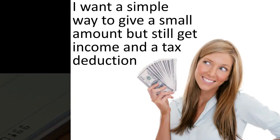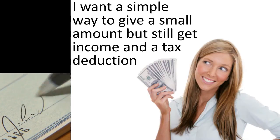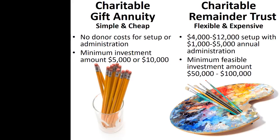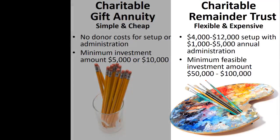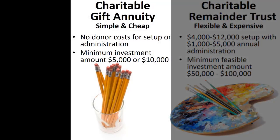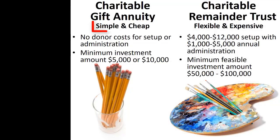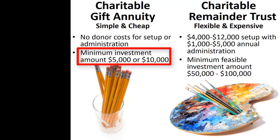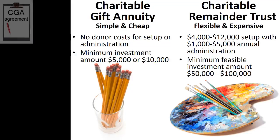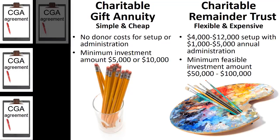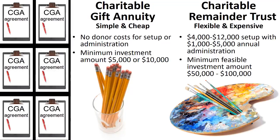The transaction can be as simple as writing a check and signing a one-page standard agreement from the charity. If the enormous flexibility available with charitable remainder trusts can be thought of as the paint palette of an artist, then the charitable gift annuity is like the reliable number two pencil. Charitable gift annuities are simple and cheap for donors — there are no donor costs for setup or administration, and the minimum investment amount is commonly only $5,000 or $10,000. Each charitable gift annuity agreement with a particular charity is typically identical except for the donor's age, the payment rate, and the transfer amount.